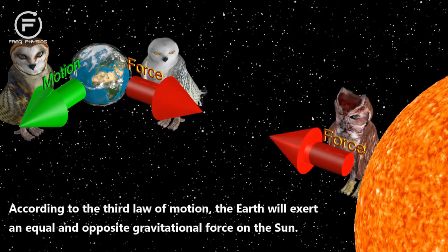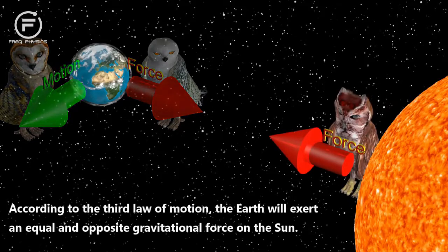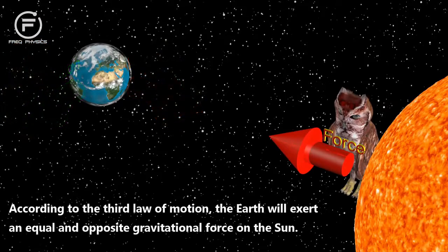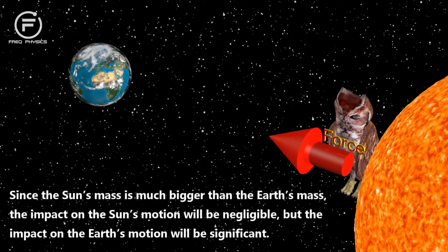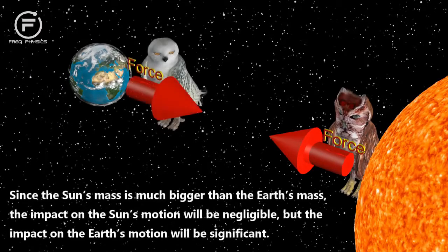According to the third law of motion, the Earth will exert an equal and opposite gravitational force on the Sun. Since the Sun's mass is much bigger than the Earth's mass, the impact on the Sun's motion will be negligible, but the impact on the Earth's motion will be significant.